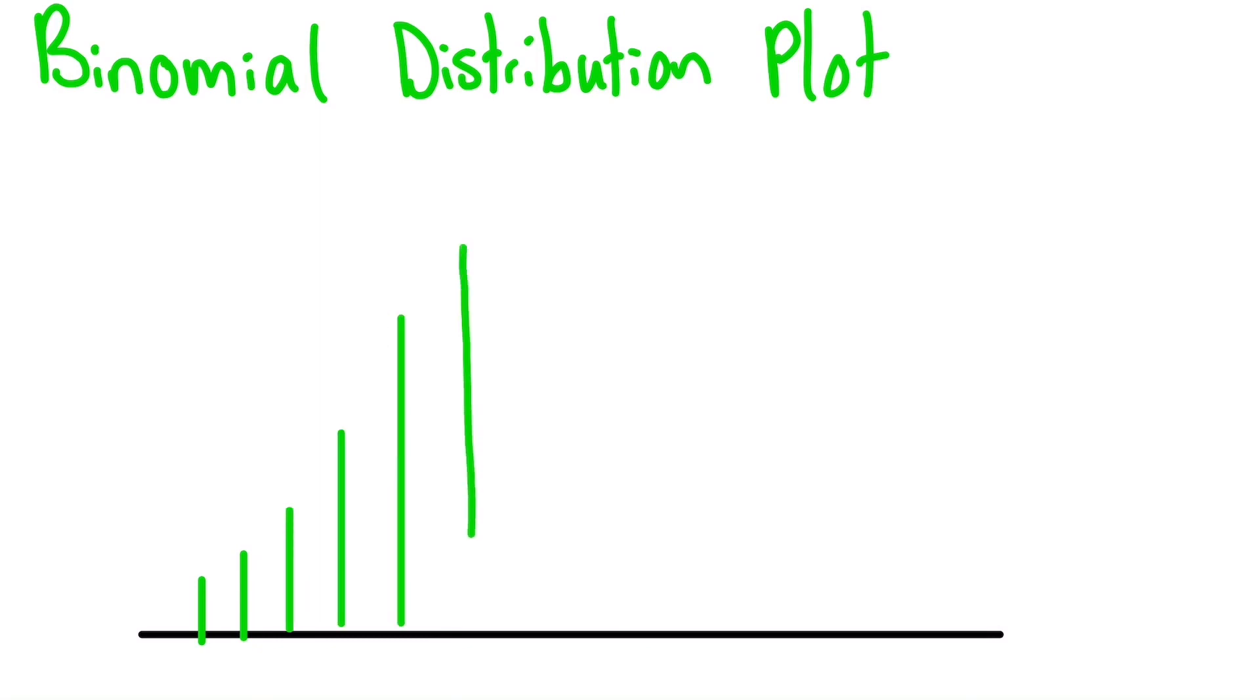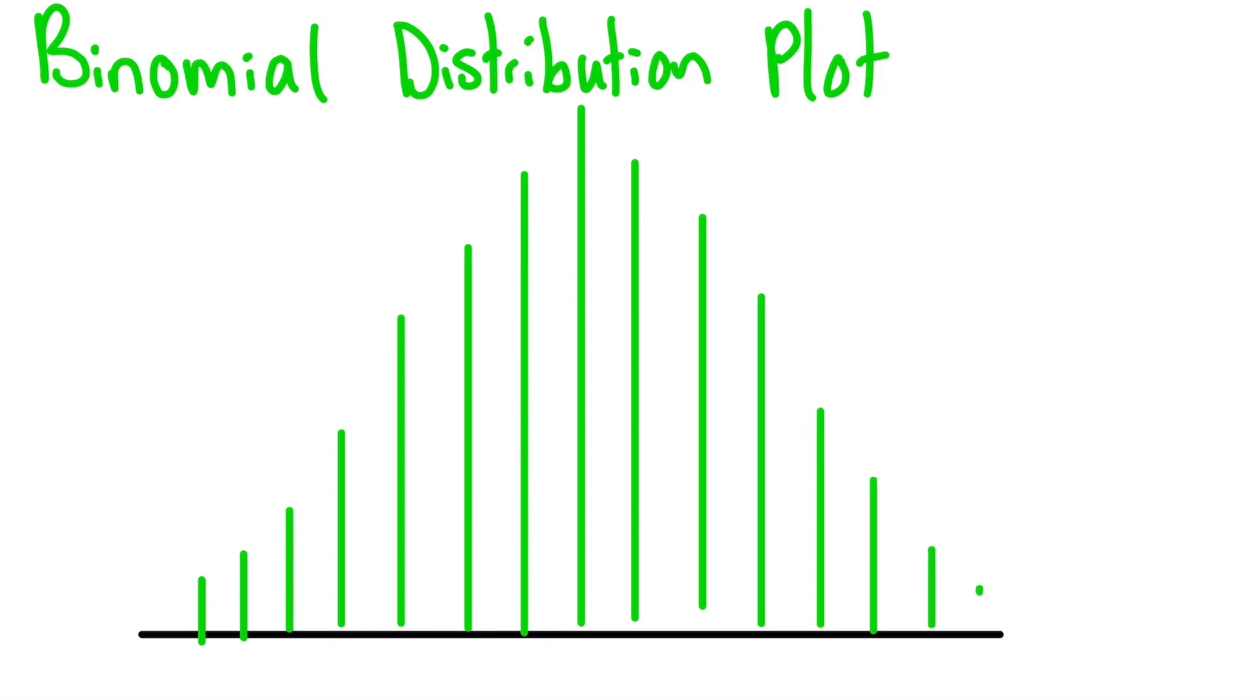The binomial distribution function looks like this, where the x-axis essentially says how many times did we get one of the two outcomes.